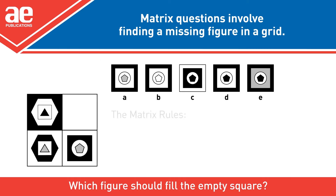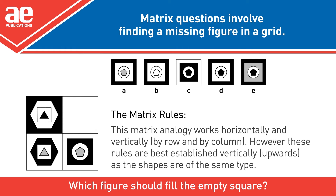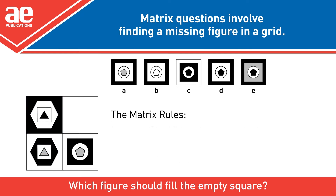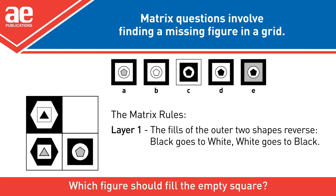The Matrix Rules: This matrix analogy works horizontally and vertically, by row and by column. However, these rules are best established vertically, upwards, as the shapes are of the same type. Layer 1: The fills of the outer two shapes reverse — black goes to white, white goes to black.